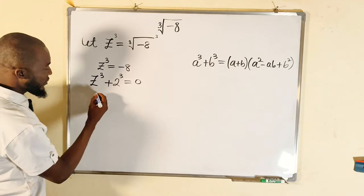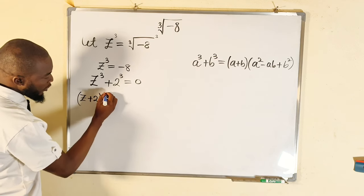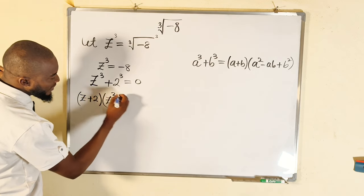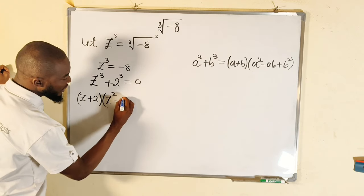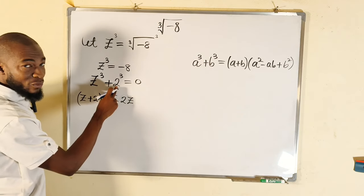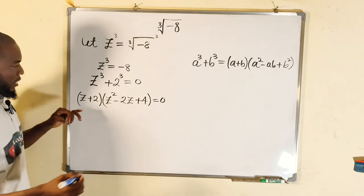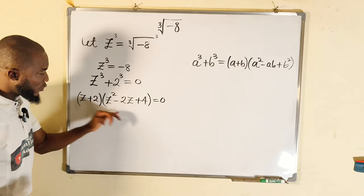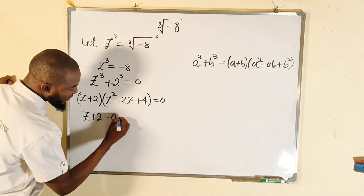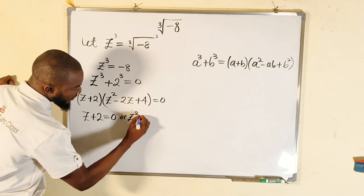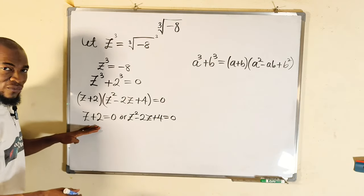This becomes (z + 2) multiplied by (z² − 2z + 4). Remember to set the whole expression equal to zero. We now have two factors: either (z + 2) = 0 or (z² − 2z + 4) = 0.